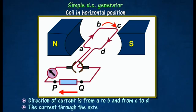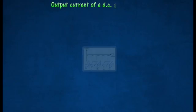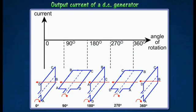The current through the external circuit is therefore a direct current. The following graph shows the magnitude and the direction of the induced current changes according to the position of the coil.